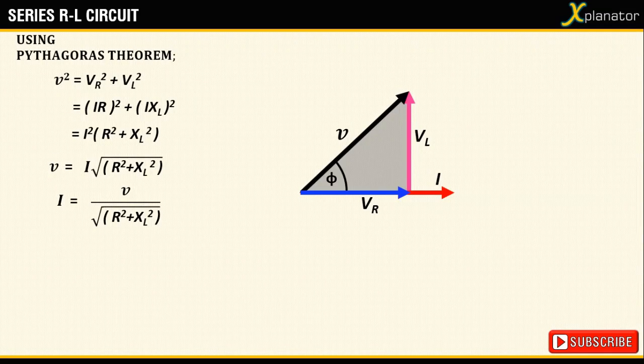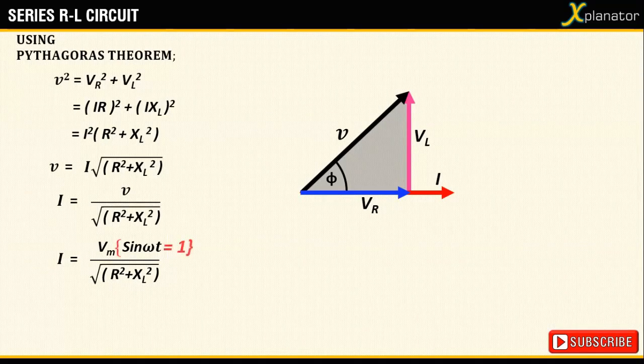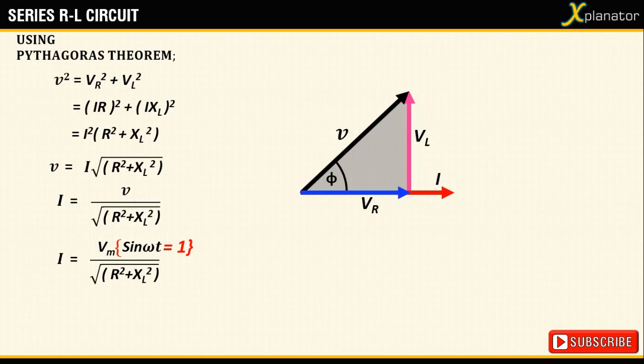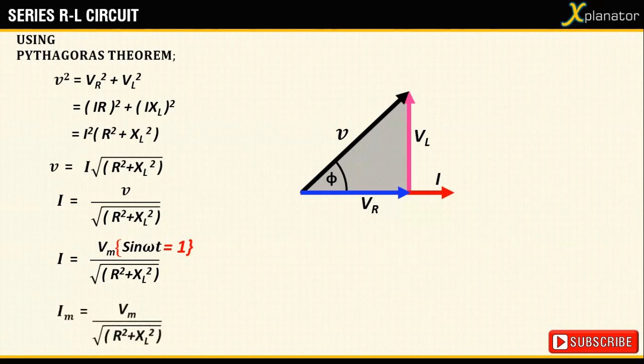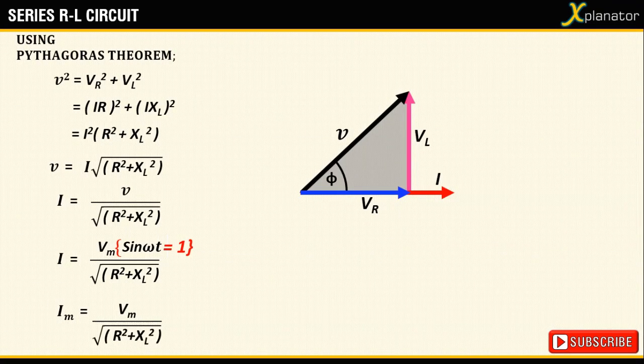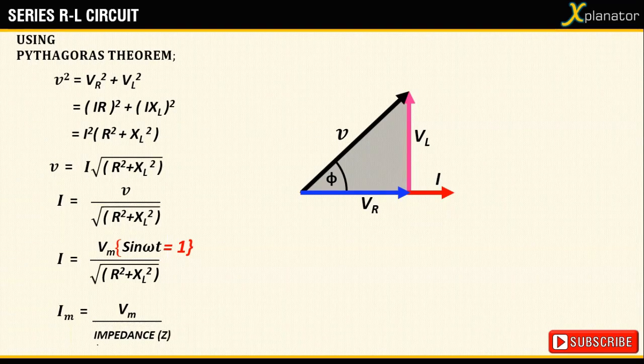Substitute V as Vm sin omega t. It is seen that when sin omega t reaches its maximum value, voltage reaches its maximum value and so will the current. The value for Im is given as Vm divided by root of (R squared plus xl squared) where the term root of (R squared plus xl squared) is called the impedance of the circuit.